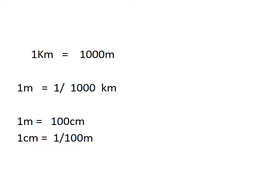Children, now you have to learn this table. One kilometer is equal to one thousand meters. One meter is equal to one upon one thousand kilometer. One meter is equal to one hundred centimeters, and one centimeter is equal to one upon one hundred meter. If you want to change into a smaller unit, you multiply by one thousand; if you are changing into a greater unit, you divide by one thousand.